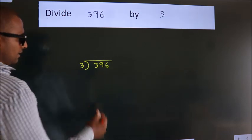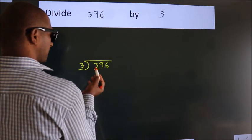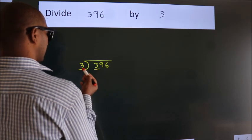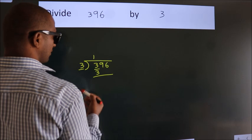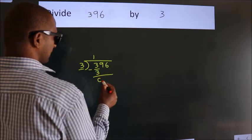Next, here we have 3. Here 3. When do we get 3? In the 3 table: 3 ones is 3. Now we should subtract. We get 0.